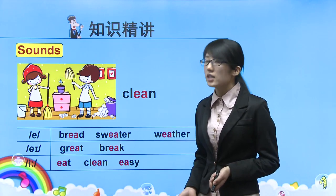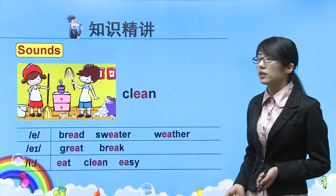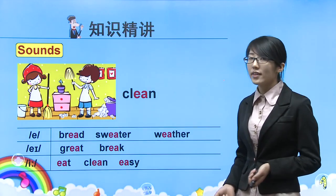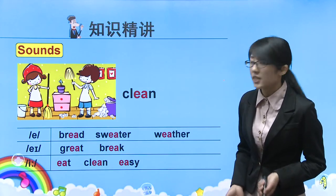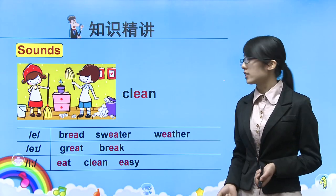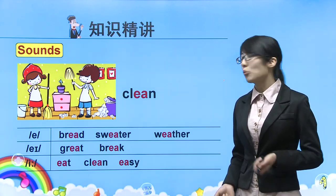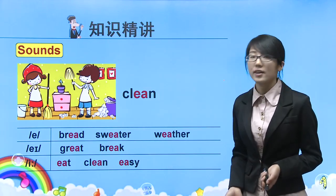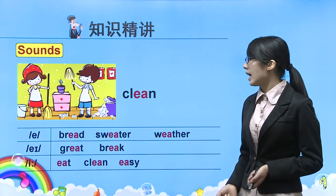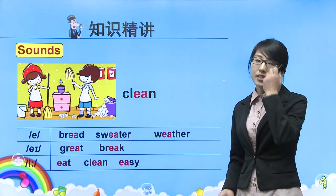语音部分：EA的发音组合。第一行读/e/：bread面包，sweater毛衣，weather天气。第二行读/eɪ/：great棒极了，break休息/打破。第三行读长音/iː/：eat吃，clean打扫，easy简单容易。